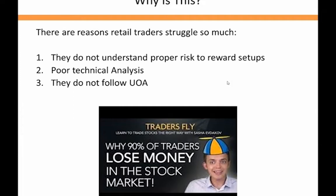There are three main reasons why retail traders struggle. Number one: they do not understand proper reward-to-risk ratios. Mark showed you a strategy where you can get 9-to-1 on a call fly — and that trade makes money anywhere in a $36 range from $752 to $788. Not only do butterflies work well because you can make so much money very quickly, you can also have a range where you make money.